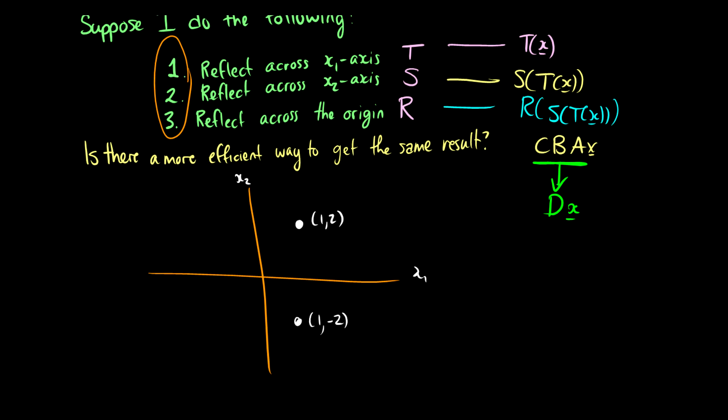Then I'm reflecting across the x2 axis. So this becomes (-1, -2). But now I'm reflecting it across the origin. So this point is going to move up here. And what does it mean when I reflect across the origin? Well, it means I take the negative of both. So I end up at the point (1, 2), which is exactly the same point as I started out with.